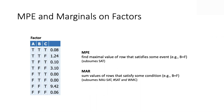MPE is: find me a row with a maximal value — specifically, among those rows that satisfy some event (say, B equals false), find the one with the largest value. MAR is: sum up the weights of those rows compatible with a particular evidence. That's an abstraction. If this factor happens to be a distribution coming from a Bayesian network, that's a special case, but we're going to do this more generally.